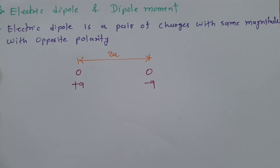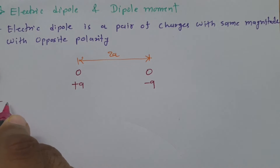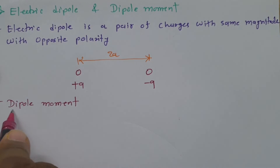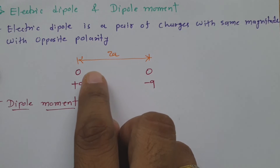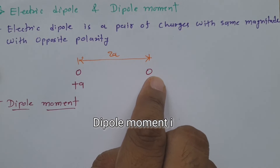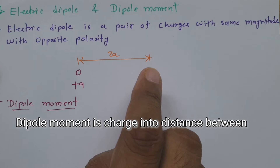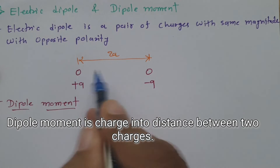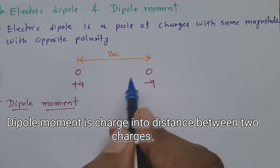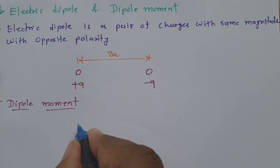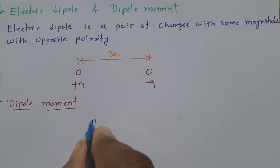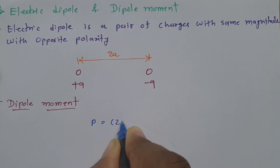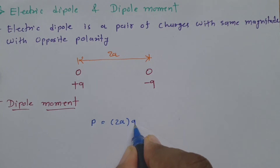Now let us try to understand what is dipole moment. Dipole moment is any one charge of the electric dipole multiplied by the distance in between the two charges. So if dipole moment is p, then it equals twice a — the distance between the two charges — multiplied by charge q.